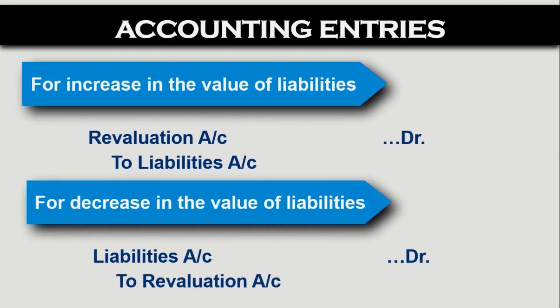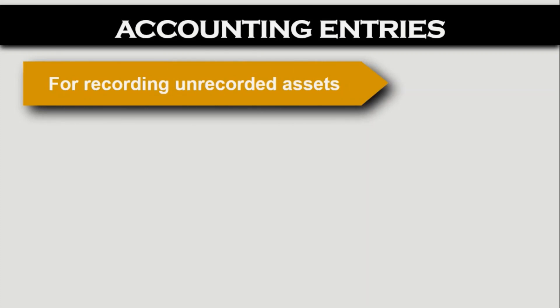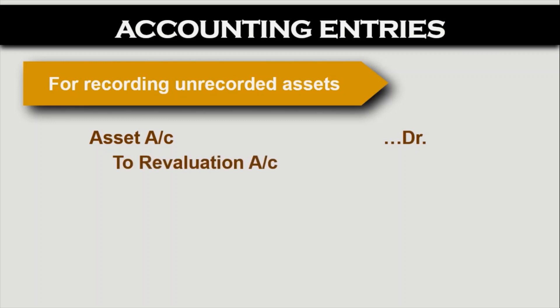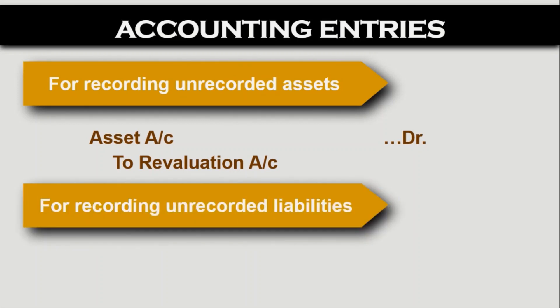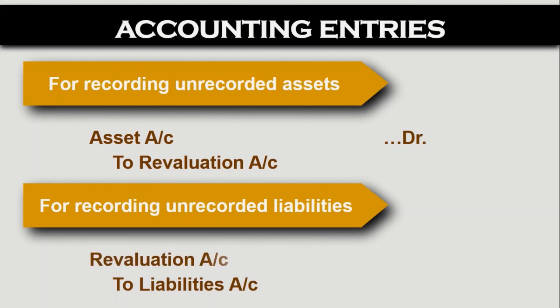Now suppose one day while going through the premises, I found an unrecorded asset — a typewriter which is still working but not recorded in our books. For recording an unrecorded asset: as it is an asset it will be debited, and being our gain, the revaluation account will be credited. Then for recording unrecorded liabilities: liabilities credit, revaluation debit. That's very simple.